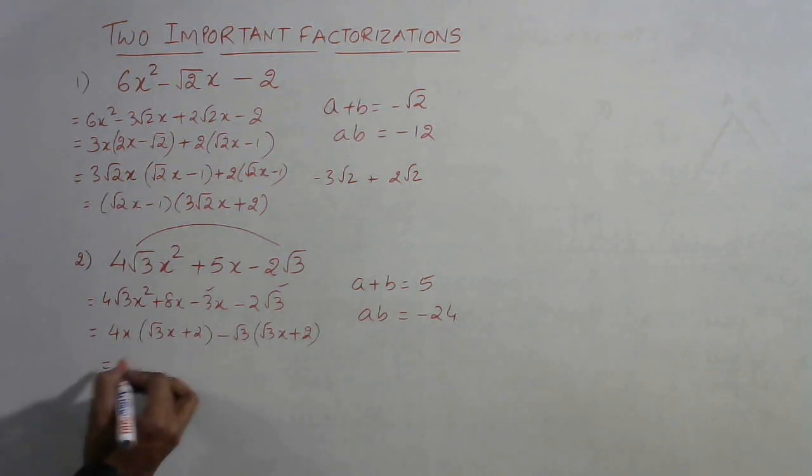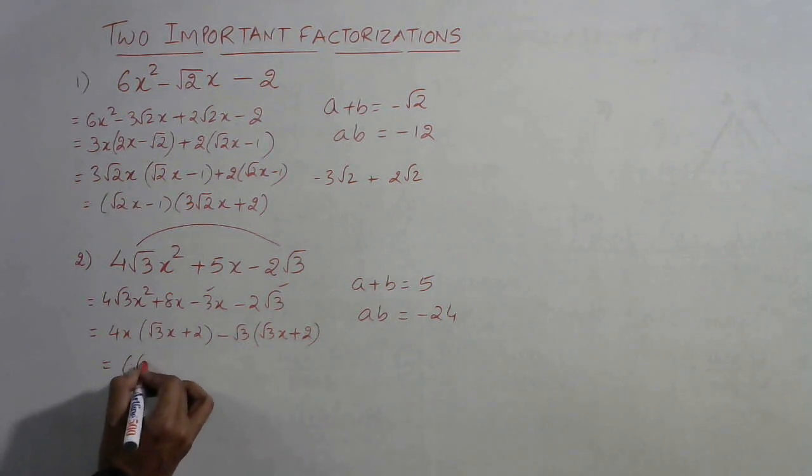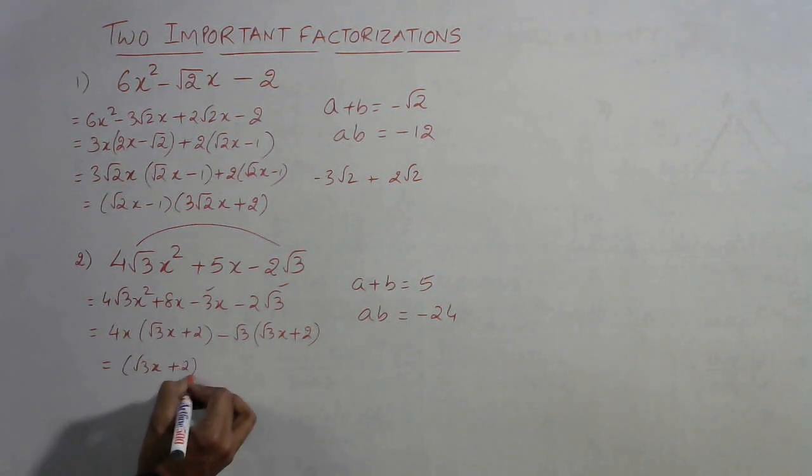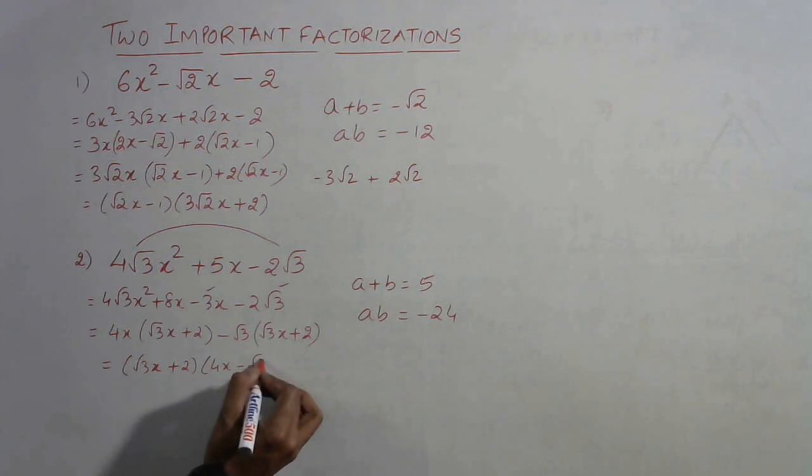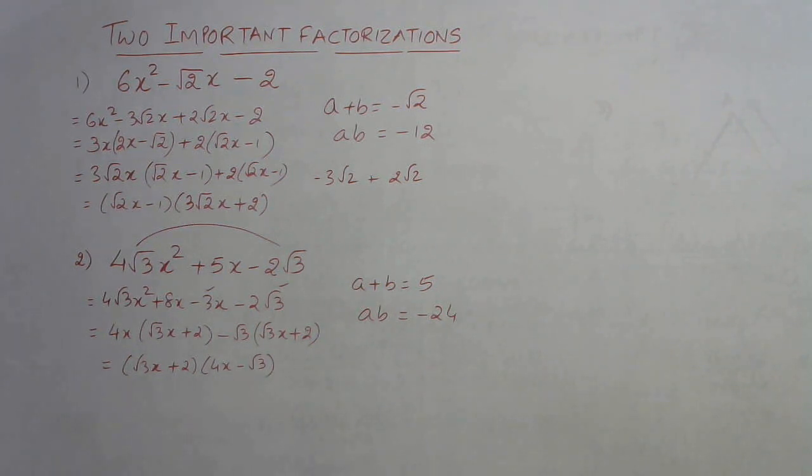Now you see the bracket is same. So root 3 x plus 2 will be the first factor and 4x minus root 3 will be the second factor. Comparatively easy problem as compared to the first one and I am sure if you practice these two questions then lot of your problems of factorization will be solved.